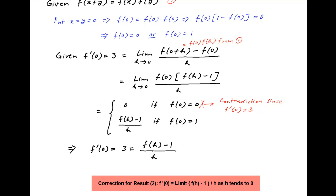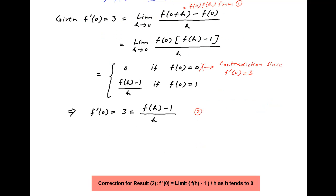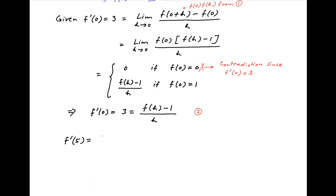It therefore follows that f'(0) = 3 equals the limit as h tends to 0 of [f(h) - 1] / h. Let's call this result 2. Now f'(5) is equal to the limit of [f(5+h) - f(5)] / h as h tends to 0.